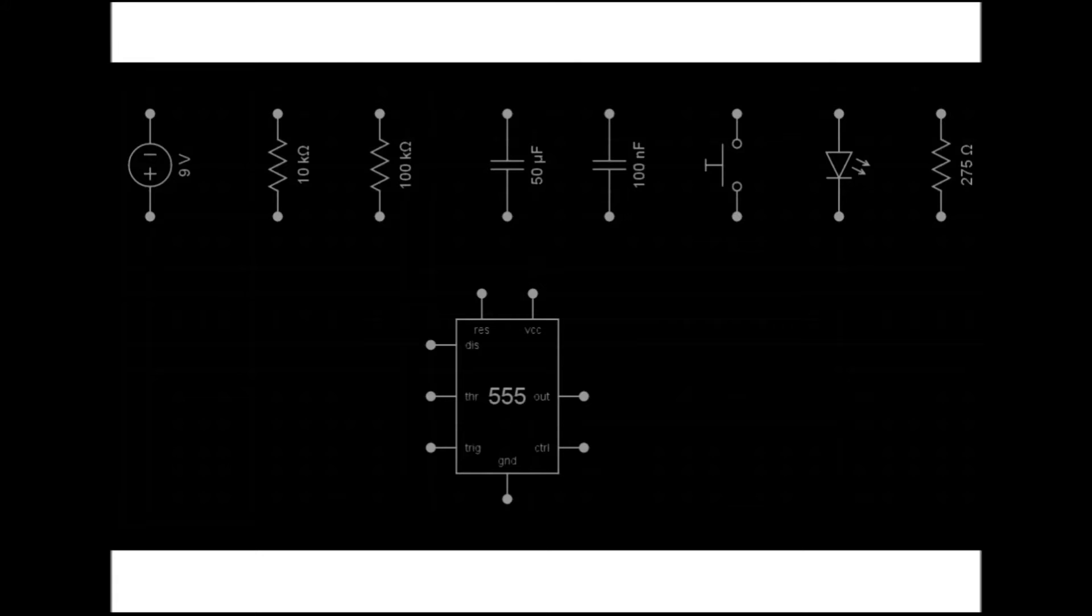For the monostable circuit, we need the following components: a 9V DC power supply, a 100kΩ resistor, a 10kΩ pull-up resistor, a 50μF capacitor, a 100nF capacitor, a push-button switch, and a signal LED with appropriate current limiting resistor.